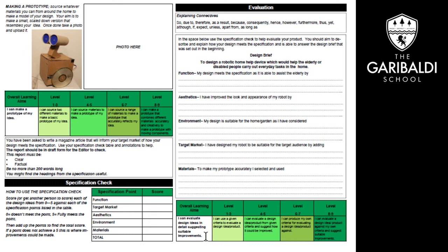Once that's done, we're moving on to the final task — creating an evaluation. I've put a score chart here, where you score from zero to five how well your model and design meet the original specification. Add up the scores, then briefly explain how well you feel your product meets each point. If it scored high, explain what you did successfully. If it scored low, tell me why and what you could do to improve it. That will help justify where you sit in the evaluation.